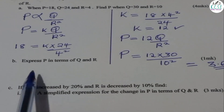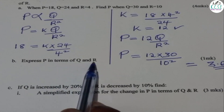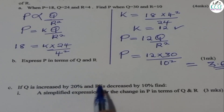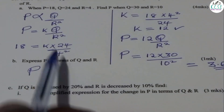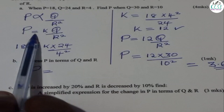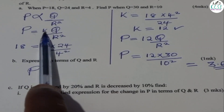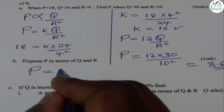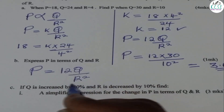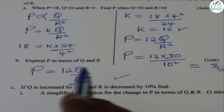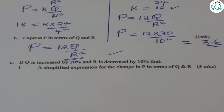Now let's go to Part B, which is easy. Express P in terms of Q and R. We've already done this — P equals KQ divided by R squared, and we've found K equals 12. So P equals 12Q divided by R squared. That is P in terms of Q and R.